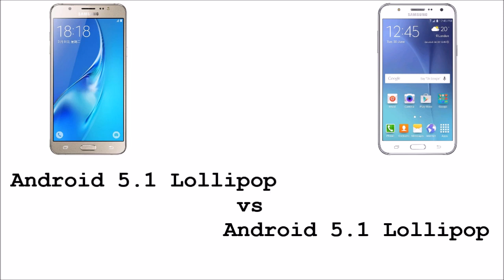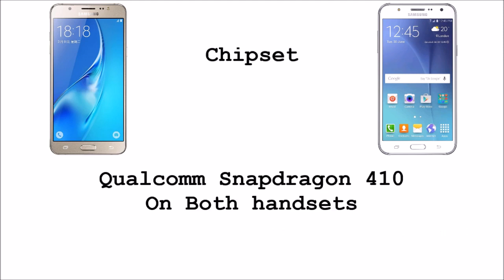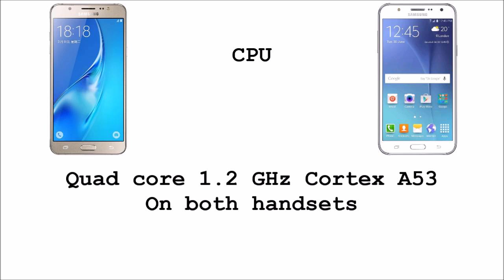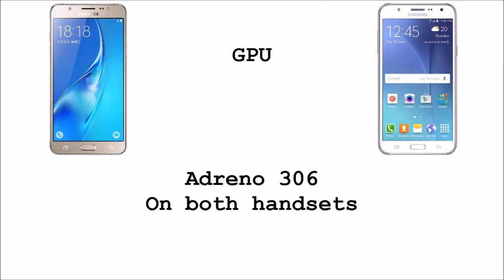As for the operating system, both handsets got Android 5.1 Lollipop. Coming to the chipset, both handsets got Qualcomm Snapdragon 410. As for the CPU, both handsets got a Quad-Core 1.2GHz Cortex-A53 CPU. As for the GPU, both handsets got Adreno 306 GPU.